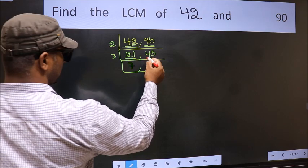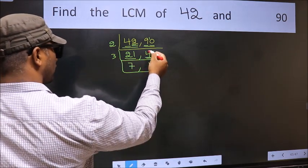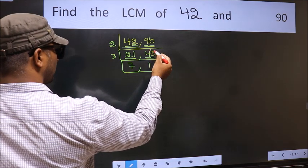So the first number 4. A number close to 4 in 3 table is 3 times 1 is 3. 4 minus 3 is 1, 1 carried forward is 15.